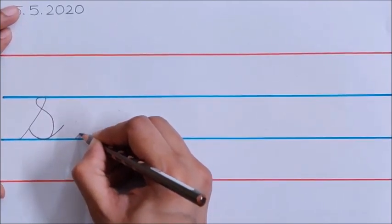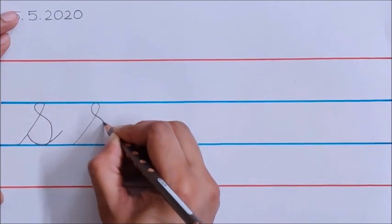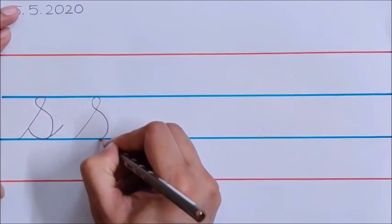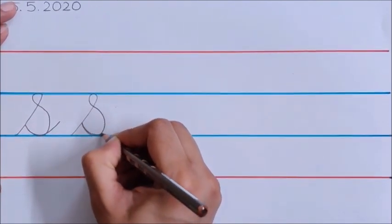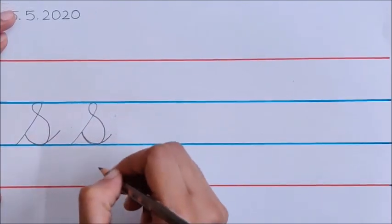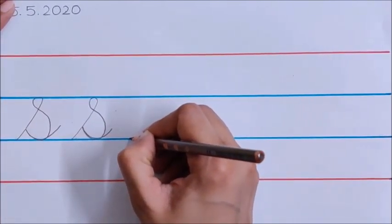Go up. Touch the blue line. Small loop. Come down. Touch the lower blue line. Go up. Now come back on the same line. And a small tail children. Children, do not write letter S like this.